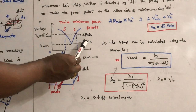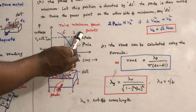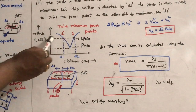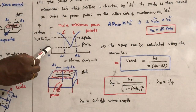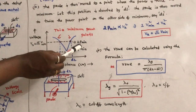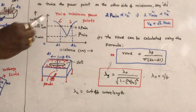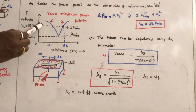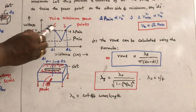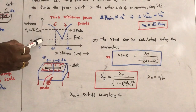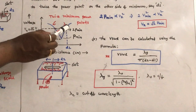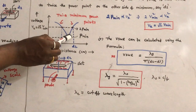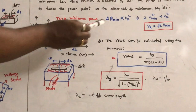In terms of power, D1 and D2 correspond to twice the minimum power. In terms of voltage, from power-voltage relations, if the minimum point is V minimum, then the voltages at D1 and D2 are √2 × V minimum.